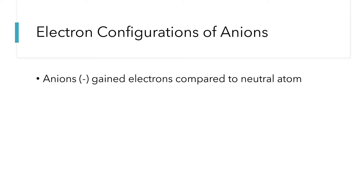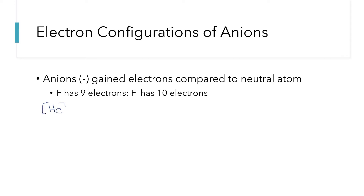An anion, a negative one, is something that has gained electrons compared to the neutral atom. As a concrete example, fluorine has nine electrons, and the fluoride ion has picked up one extra and has 10 electrons. If we write the electron configuration for fluorine, the noble gas core would be helium, followed by 2s2, 2p5 — we count over five in the p block to get to fluorine. If we add one more electron to make the fluoride ion, we add one more electron to the configuration. So it starts with the noble gas core of helium, followed by 2s2, then 2p6.